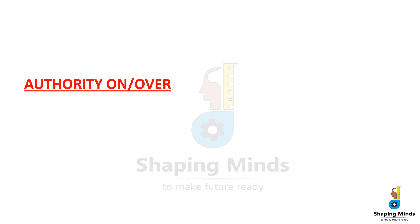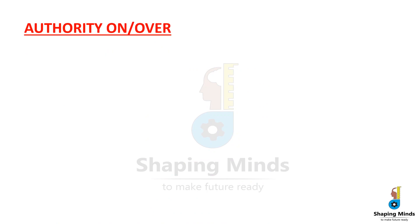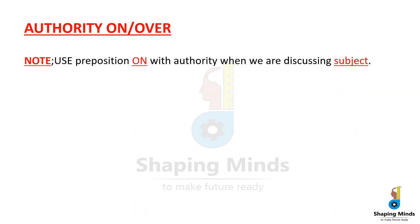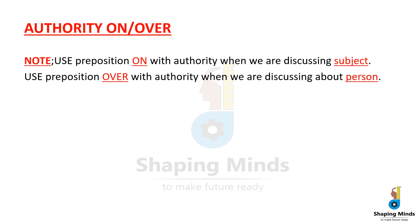I want to tell you that in exams, there are some words that they ask again and again. Our first word is 'authority.' With this word, we use the prepositions 'on' and 'over.' Case 1: authority with preposition 'on' — used when we discuss a subject. Case 2: authority with preposition 'over' — used when we discuss persons or people under someone.